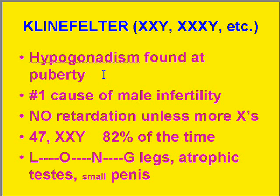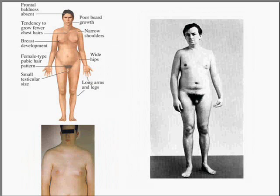There's hypogonadism, most evident at the time of puberty. The key feature to remember is that they have long legs but small external genitalia. There's poor beard growth, curvy hips, and more of a female pattern of pubic hair.